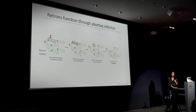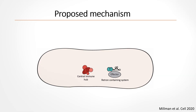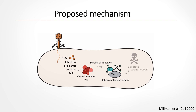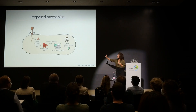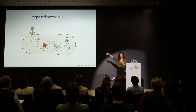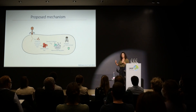Of course you don't want to commit suicide for no reason — this process needs to be highly regulated. We wanted to know what triggers it. We developed a model: when the phage infects a cell containing the retron defense system, phages typically bring inhibitors of the first lines of defense. So the phage inhibits some central immune hub in the cell, and this inhibition is sensed by the retron, which then activates the defense — essentially killing the cell so the colony survives. The retrons do not sense phage infection directly, but rather sense the inhibition of the first line of defense.